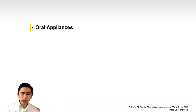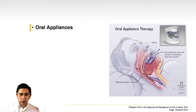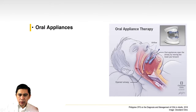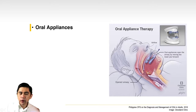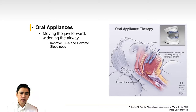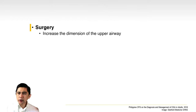Oral appliances are contraptions made by a dentist, placed on both the upper and lower dental arches. A hinge mechanism moves the jaw forward when the mouth is closed, which also moves the tongue forward and widens the airway. Studies have shown that using oral appliances improves OSA and daytime sleepiness.